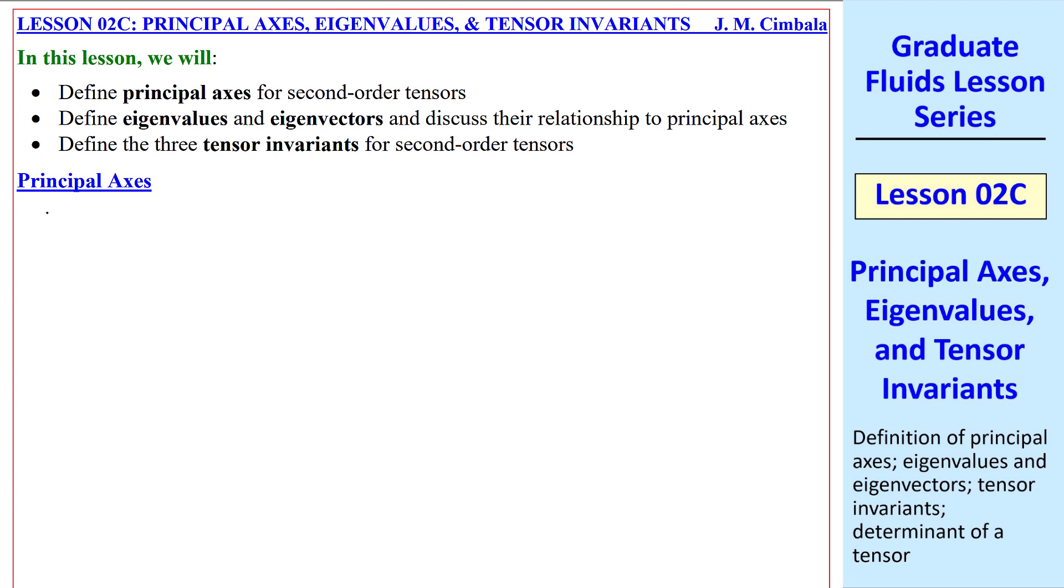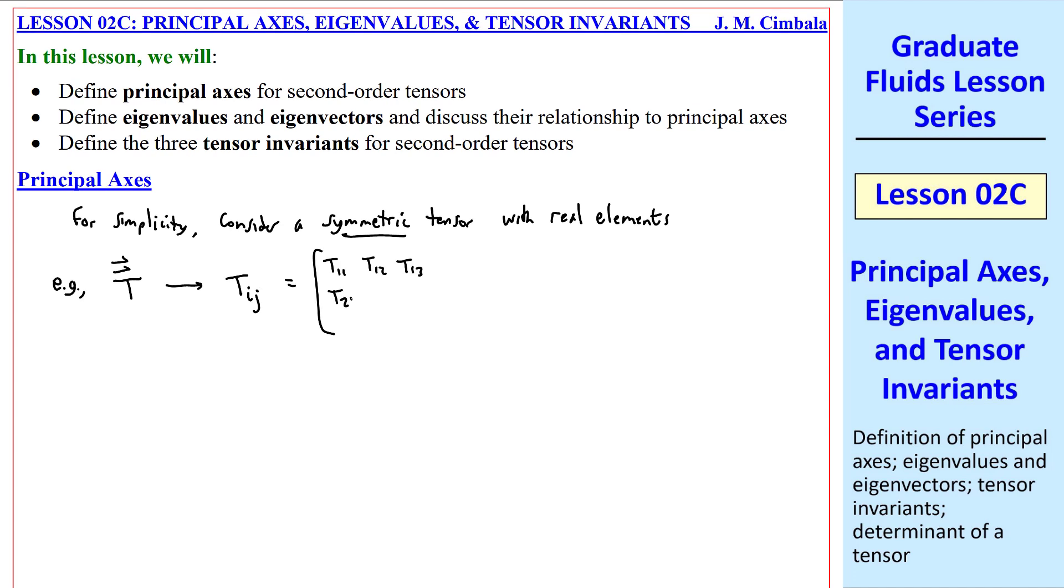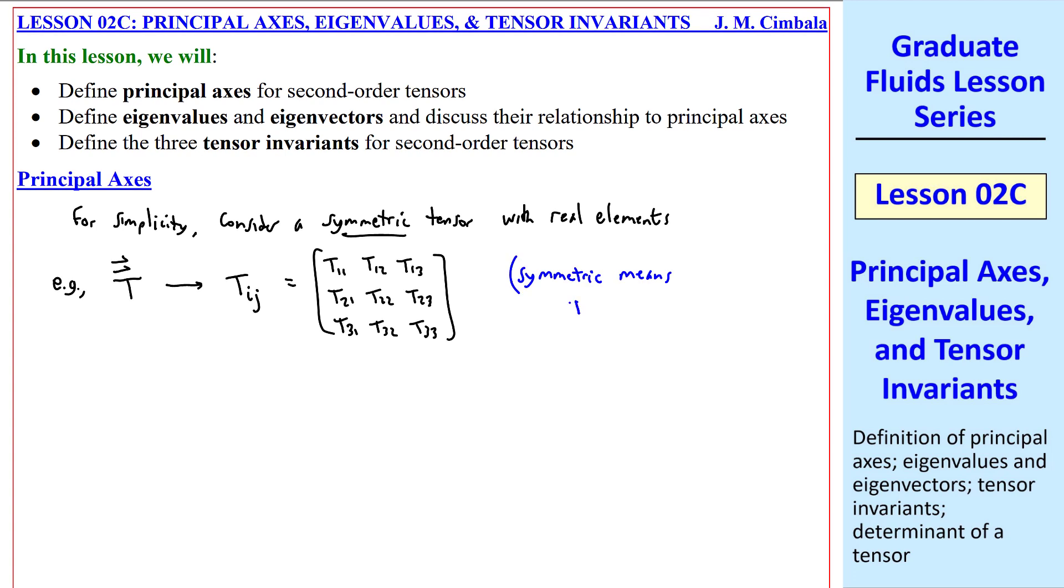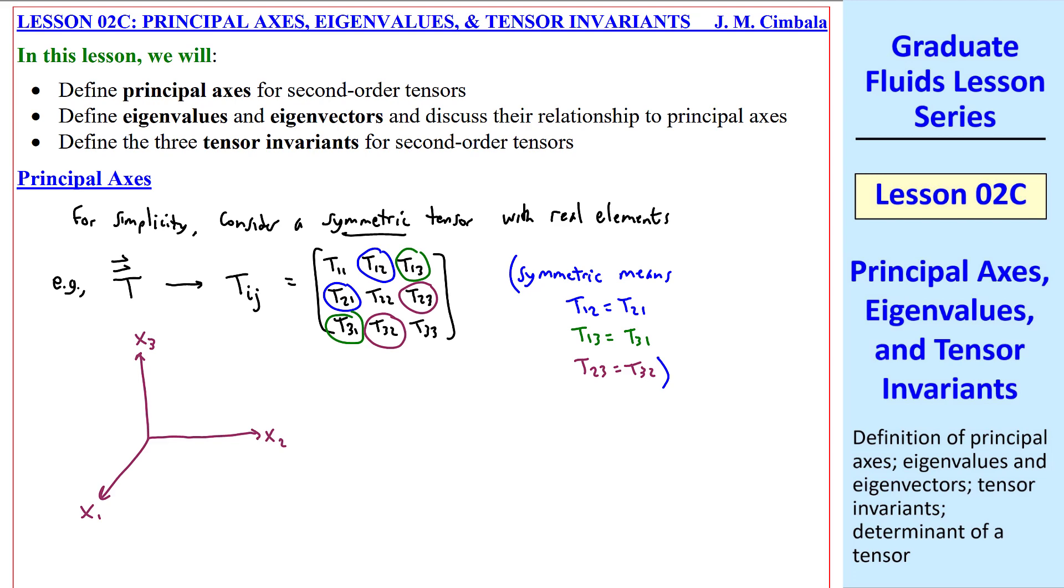First, consider principal axes. For simplicity, we'll consider a symmetric tensor with real elements. Yes, you can have tensors with complex or imaginary elements, but we're not going to deal with those now. For example, suppose T is a second-order tensor. We write it in tensor notation as Tij, and in matrix format, like this. I remind you that symmetric means T12 equal T21, T13 equal T31, and T23 equal T32. The coordinate system is X1, X2, X3.